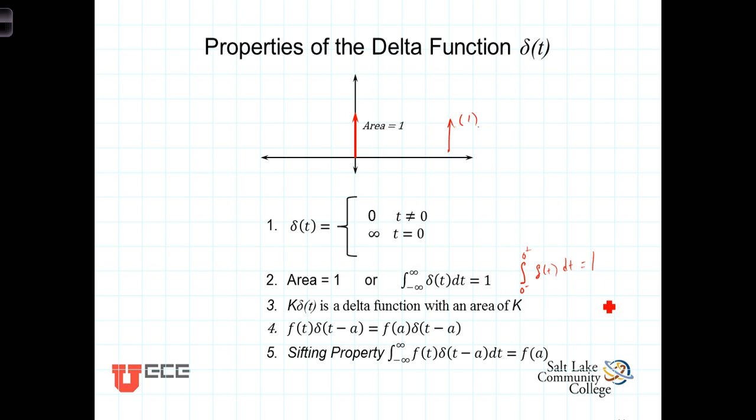And of course, it stands to reason then that as you're integrating up to the point where the impulse function is, because it's zero, at that point you then jump up one.